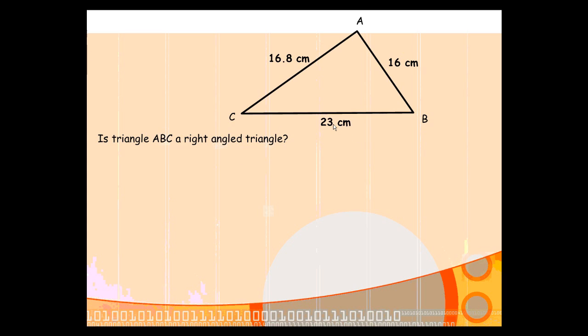The hypotenuse is going to be the longest side. So, 23 is obviously our candidate for the hypotenuse. The first thing you do is you work out, well, what is the hypotenuse squared? 23 squared is 529.